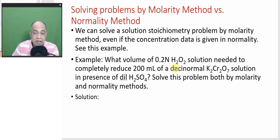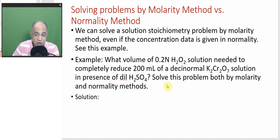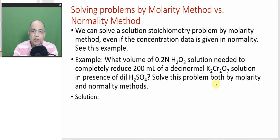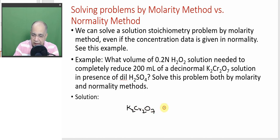What volume of hydrogen peroxide solution, 0.2N, is needed to completely reduce 200 ml of decinormal (0.1N, meaning 1/10 normal) potassium dichromate solution in the presence of acid? Solve this problem both by molarity and normality methods. If you know the N-factor, you can convert this decinormal 0.1N into the corresponding molarity in moles per litre. In acidic medium, potassium dichromate goes to chromium 3+.